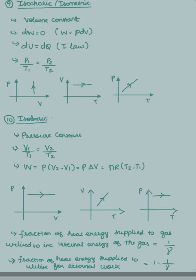Next, two most important formulas: the fraction of heat energy supplied to a gas which is utilized to increase its internal energy is given by 1/γ. The fraction of heat energy supplied that is utilized for doing external work is 1 − 1/γ. These two are simple yet important formulas for exam purposes.